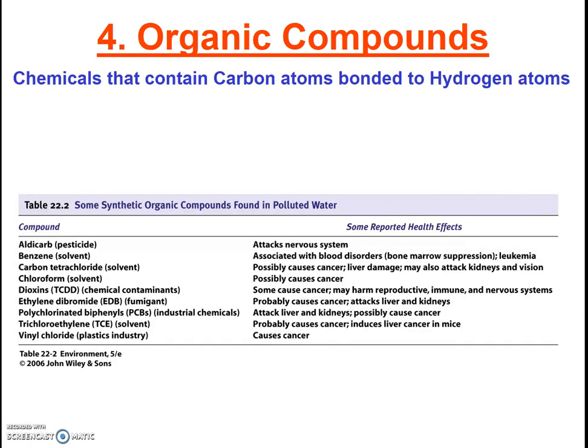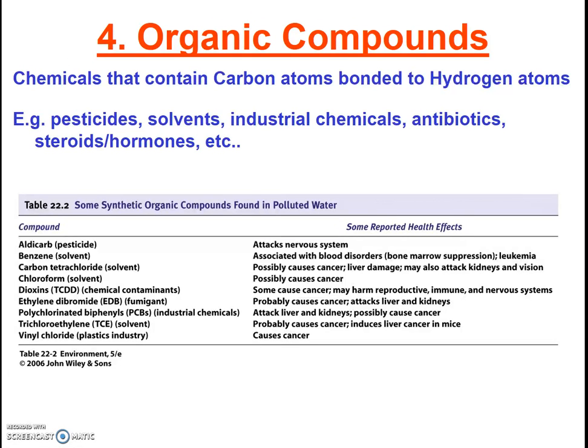Our next type of pollution is organic compounds. Organic chemicals generally include any substance with a carbon-hydrogen bond. There are many examples, including gasoline, oil, pesticides, solvents, industrial chemicals, steroids, hormones, medications, and more. Sources can vary — industrial releases, leaky underground storage tanks, roads and lawn runoff, effluent from a wastewater treatment plant, and more. Can you think of sources that are point sources and also sources that are non-point sources?